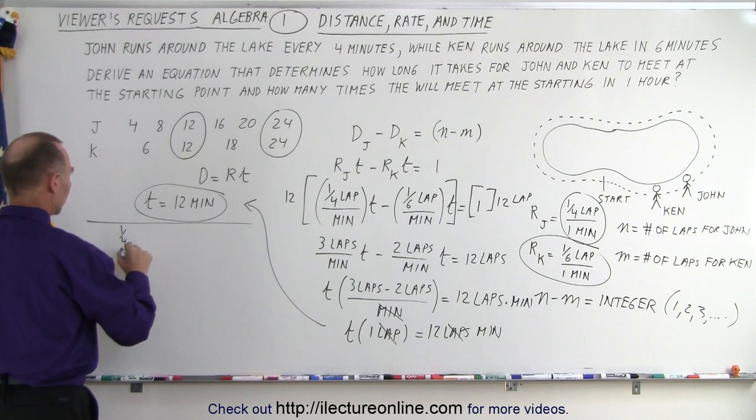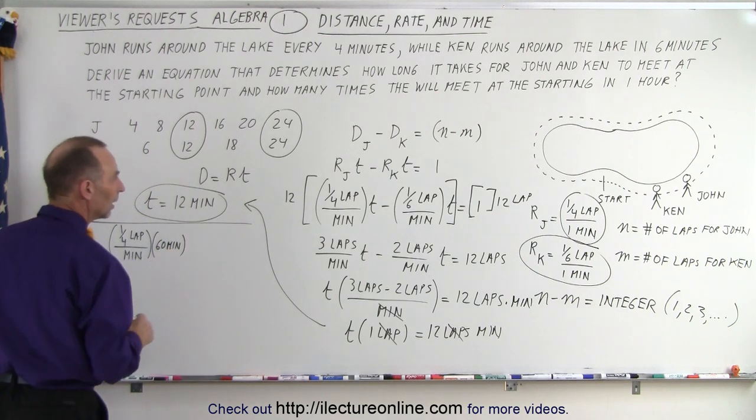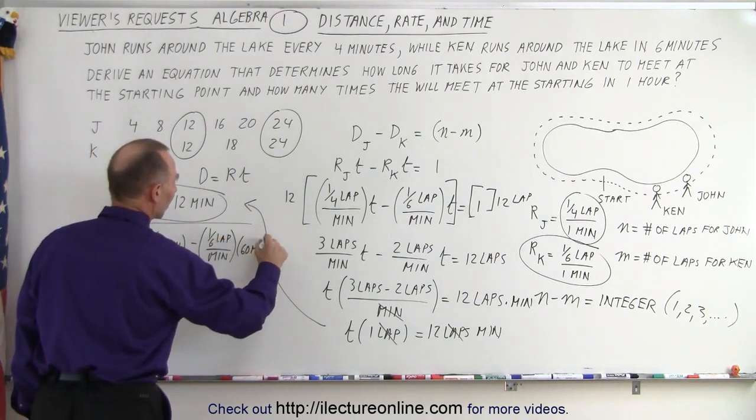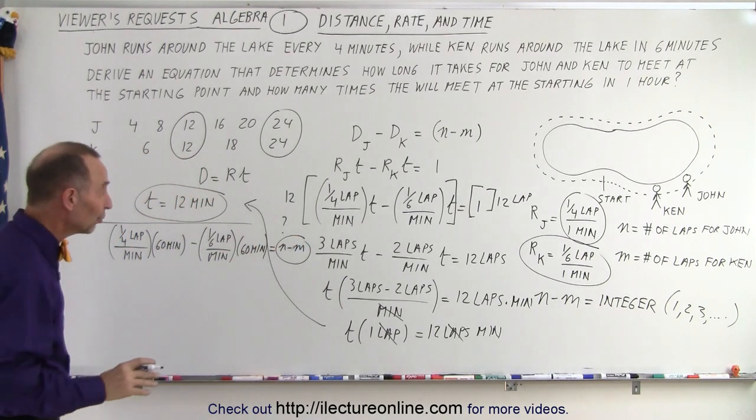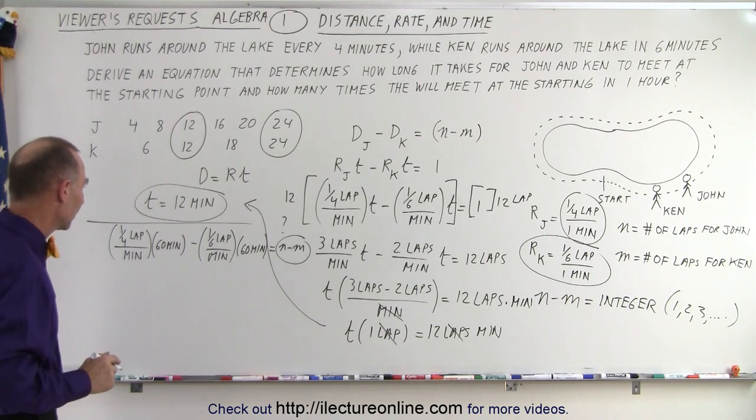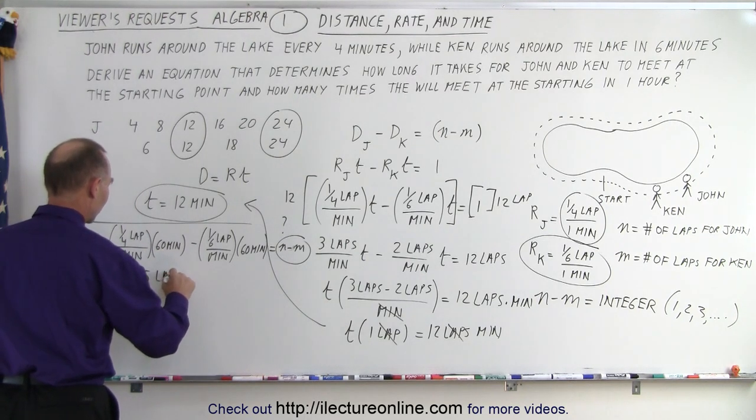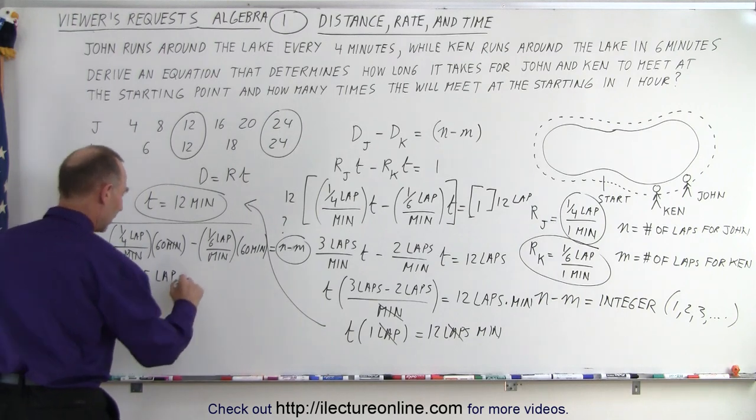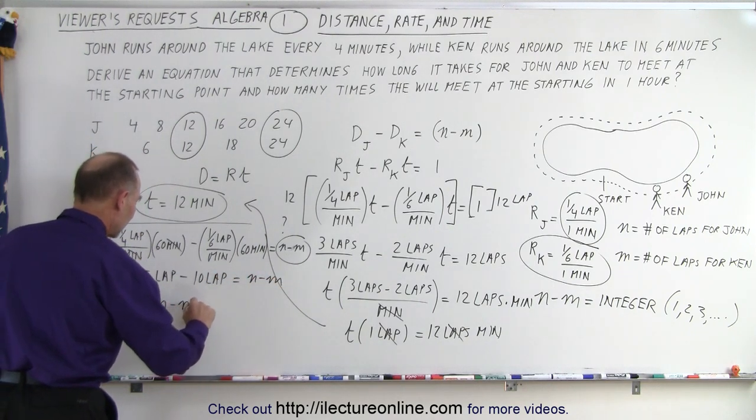For the second part of the problem, we can say one quarter laps divided by minutes, so that's the rate, times the time, which would be 60 minutes, minus one sixth of a lap per minute times 60 minutes equals N minus M. This is what we're after: how many times will John lap Ken in a 60 minute period. Four goes into 60, that would be 15 times, 15 laps. The minutes cancel out, so that simply means 15 laps minus—six goes into that, that would be 10 laps—equals N minus M. So N minus M is equal to 5 laps.